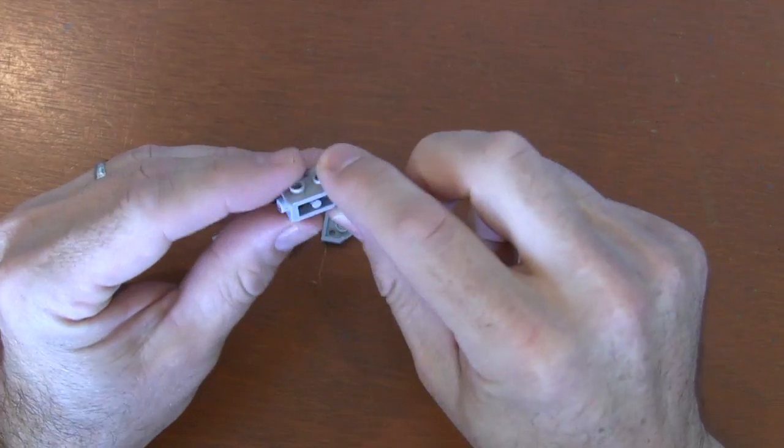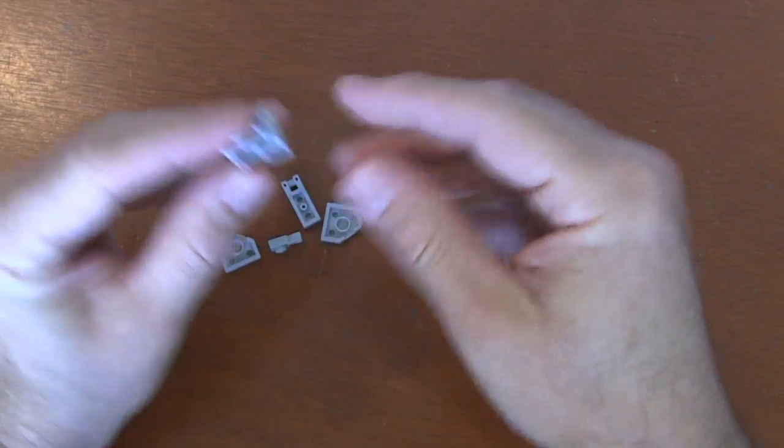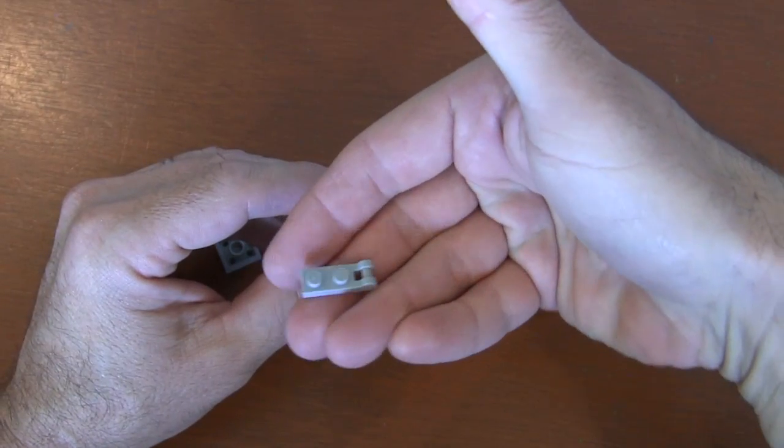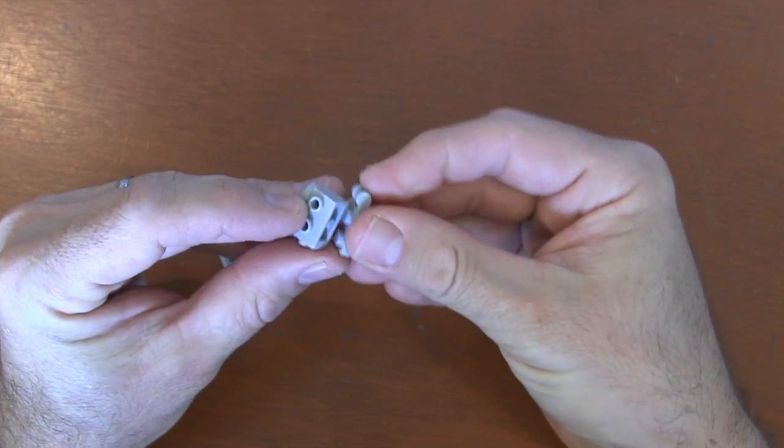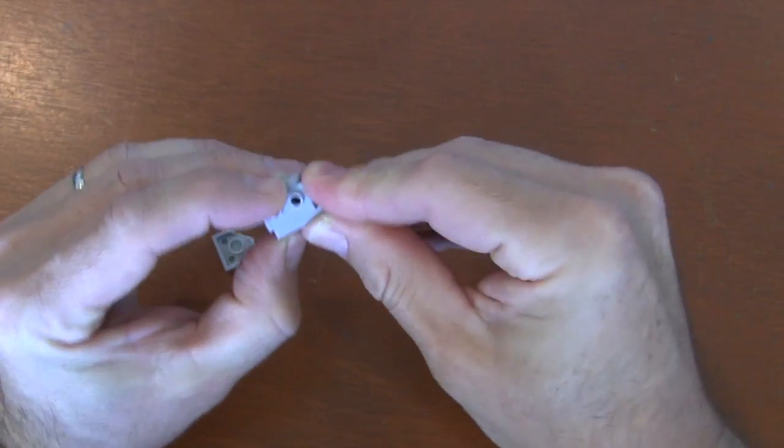The next thing we're going to do is on the bottom of this 1x2 brick, grab another one of these 1x2 handle pieces, and put it so that the handle is facing the back of our walker and the smooth end is in front.